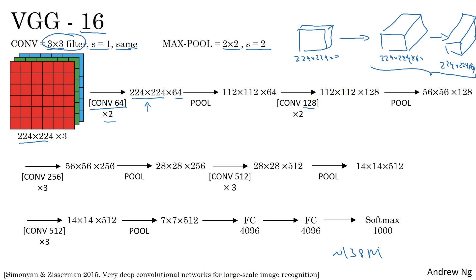You can tell this architecture is really quite uniform. There's a few conv layers followed by a pooling layer, which reduces the height and width. The pooling layers reduce the height and width. But then also, if you look at the number of filters in the conv layers, here you have 64 filters, and then you double to 128, double to 256, double to 512. The authors thought 512 was big enough and didn't double again here. But this sort of roughly doubling on every step or doubling through every stack of conv layers was another simple principle used to design the architecture of this network. I think the relative uniformity of this architecture made it quite attractive to researchers.